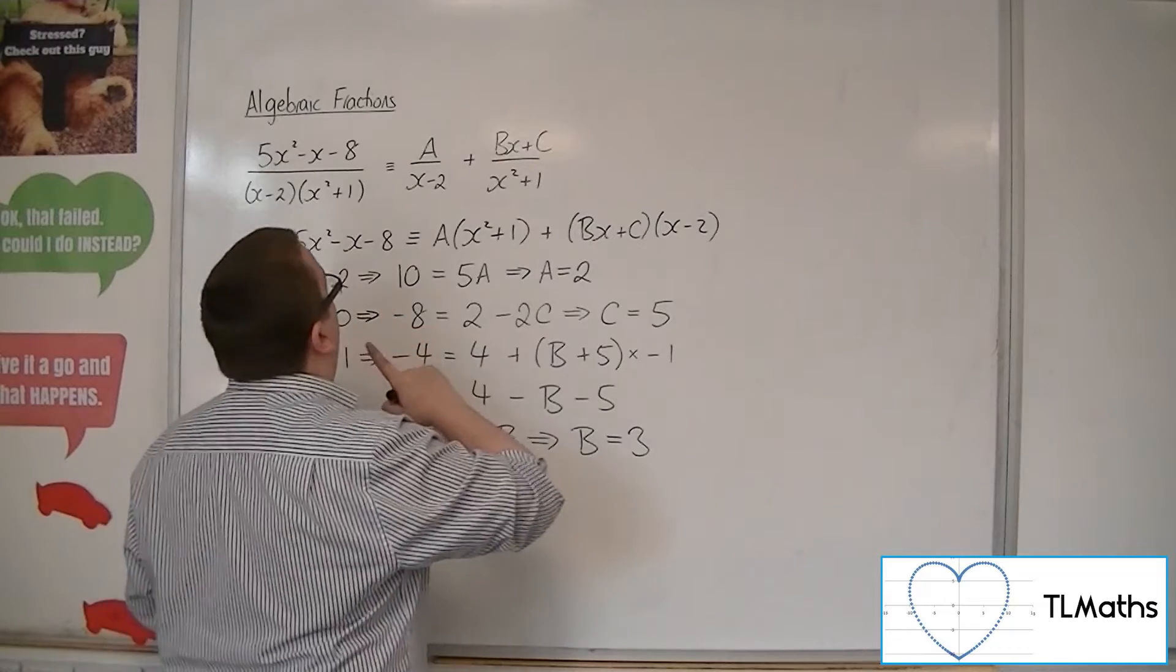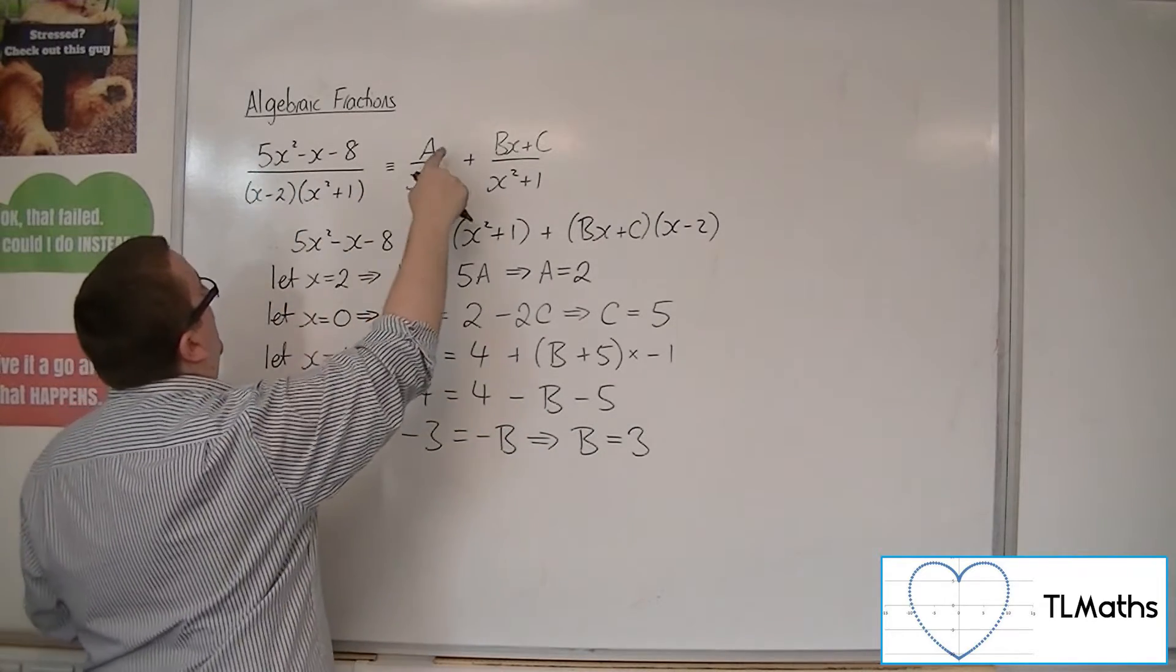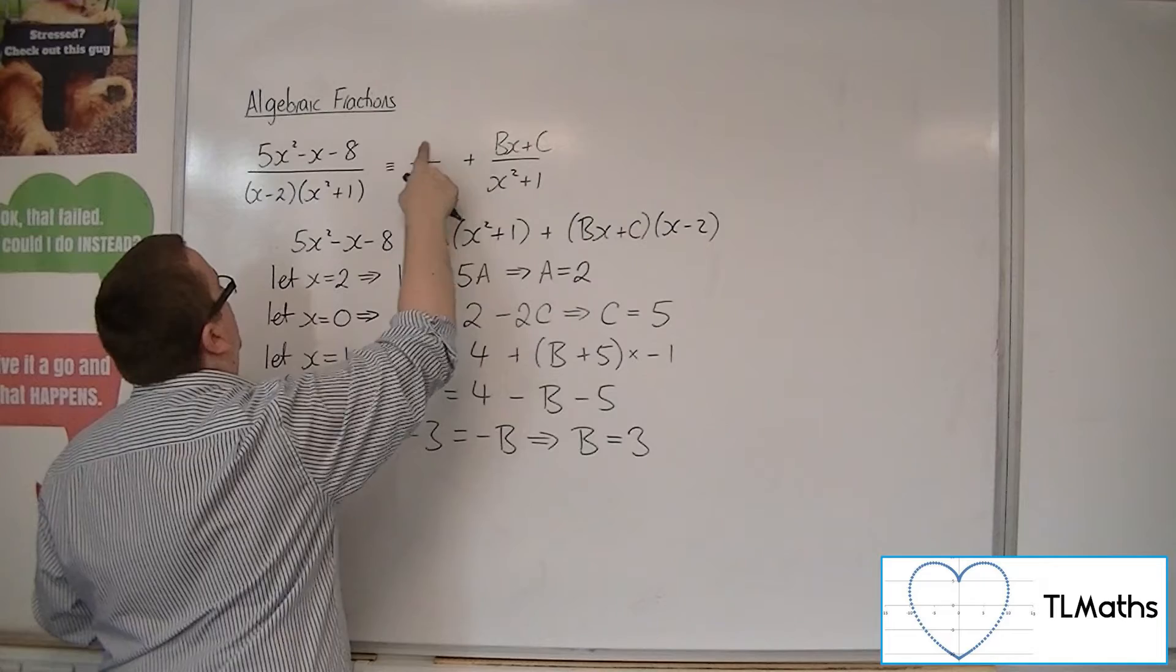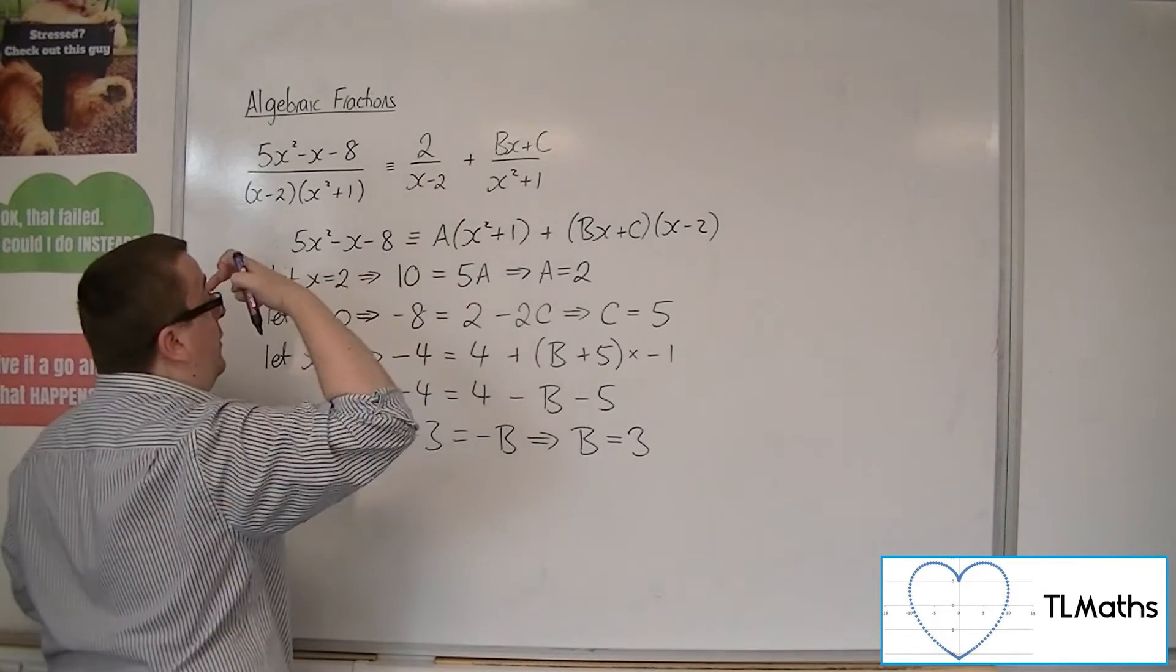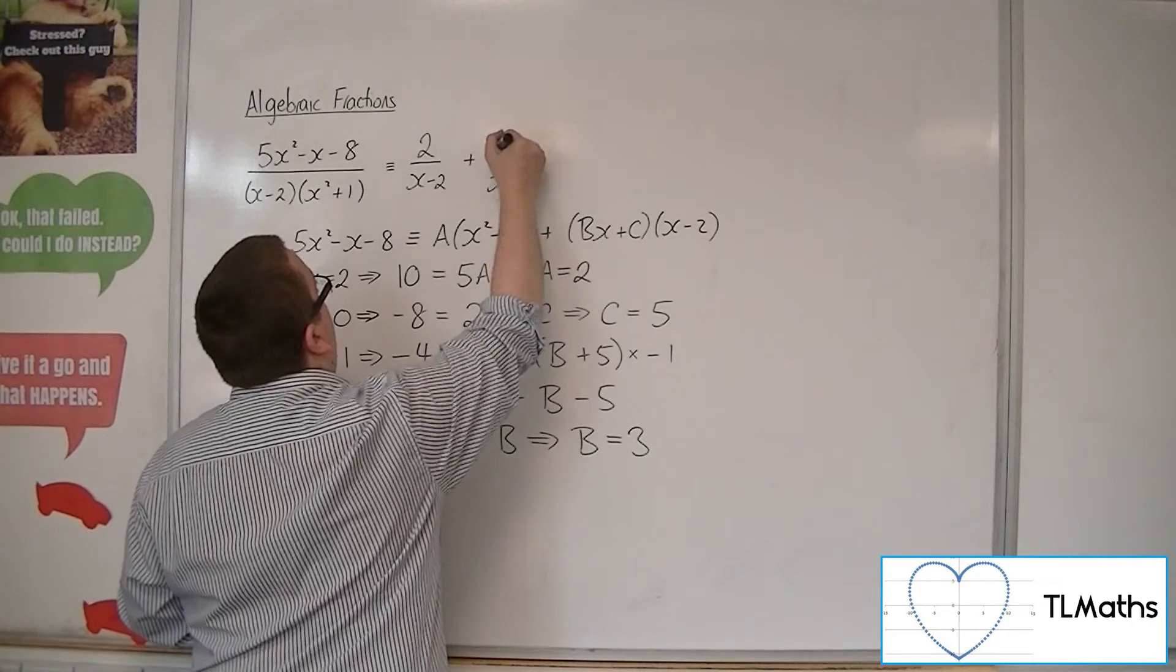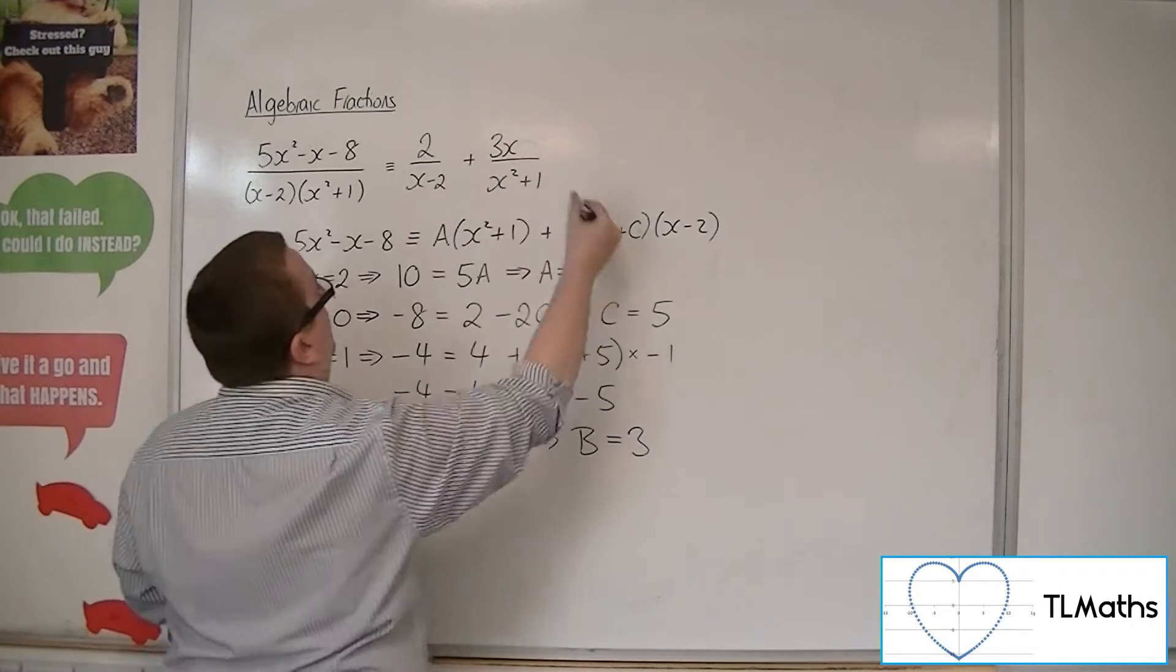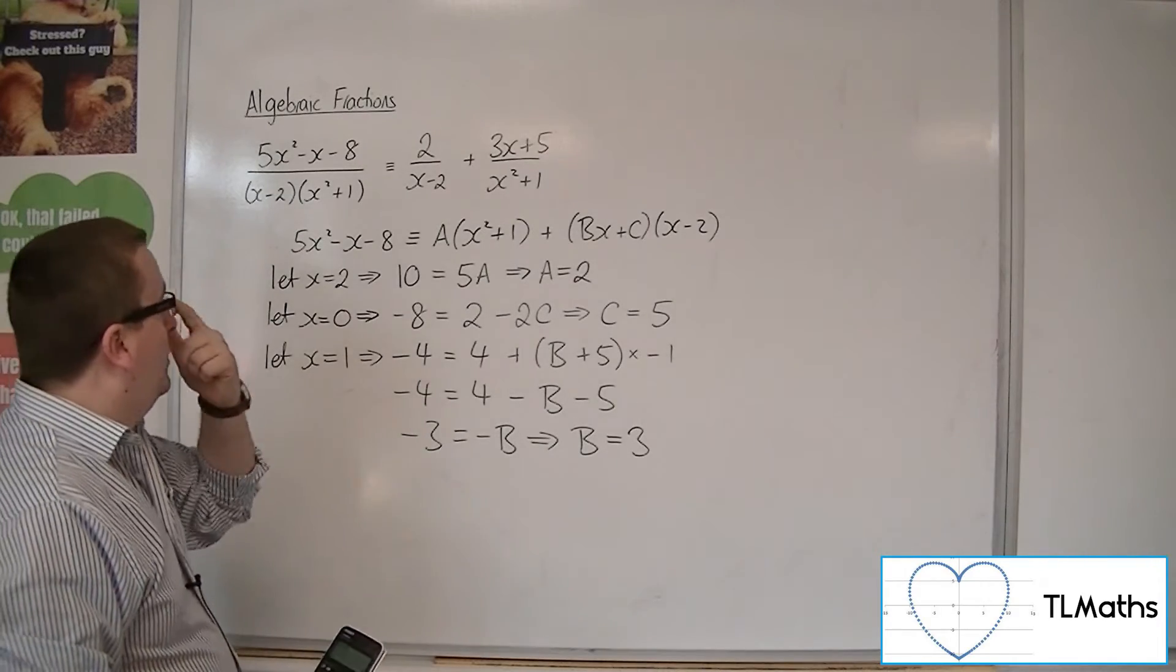So now we can say that 5x squared minus x minus 8 over x minus 2 x squared plus 1 must in fact be 2 over x minus 2 plus 3x plus 5 over x squared plus 1.